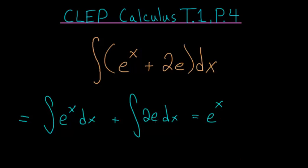And 2 times e, remember e is just a number, it's 2.718 and so on, an irrational number. Taking the integral of a constant would just be equal to that constant multiplied by the variable you're taking the integral with respect to, so x in this case.